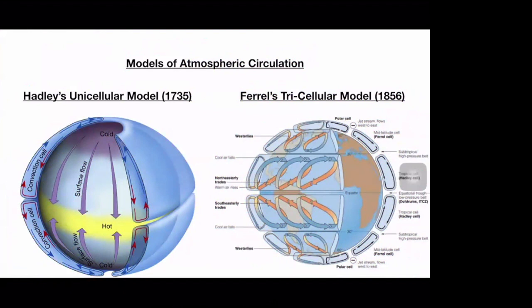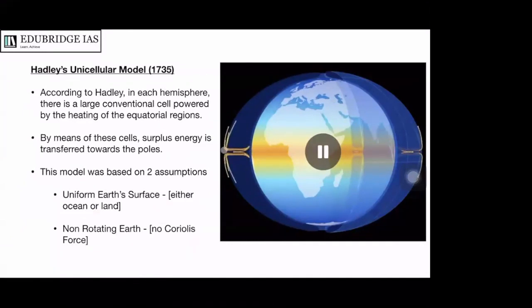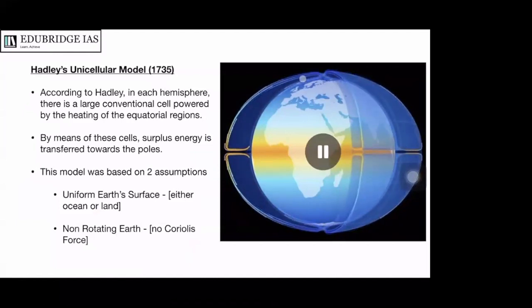Now we come to understanding the distribution of wind and pressure systems, relying on atmospheric circulation models — simplified versions of complex reality. There are two models: Hadley's Unicellular Model given by Hadley in 1735, and Ferrell's Tricellular Model given in 1856. According to Hadley's model, in each hemisphere there is a large convectional cell powered by the heating of the equatorial regions. Air rises at the equator and descends at the cold poles. This model was based on two assumptions: that the earth's surface is uniform, and that the earth is non-rotating, meaning no Coriolis force effect.